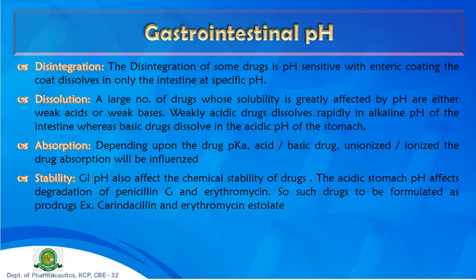Stability: GI pH affects the chemical stability of drugs. Acidic stomach pH degrades penicillin G and erythromycin, and denatures proteins — a major challenge for oral protein drug delivery. To overcome this, drugs can be formulated as pro-drugs; examples include carindacillin and erythromycin estolate, which are stable in the acidic gastric environment.